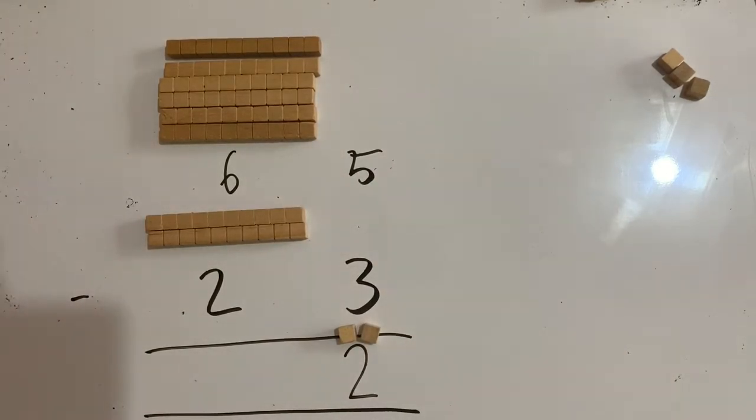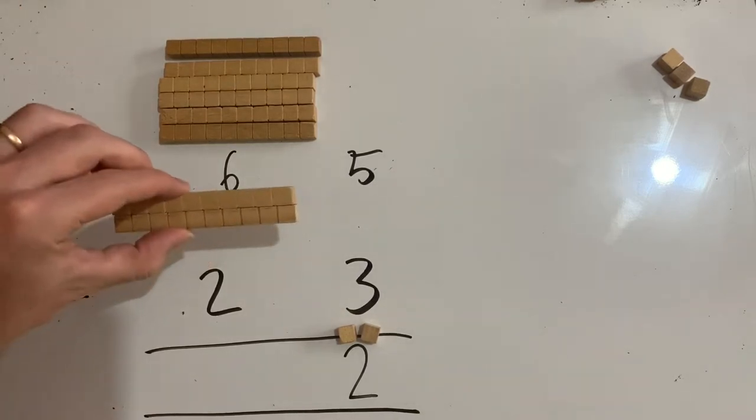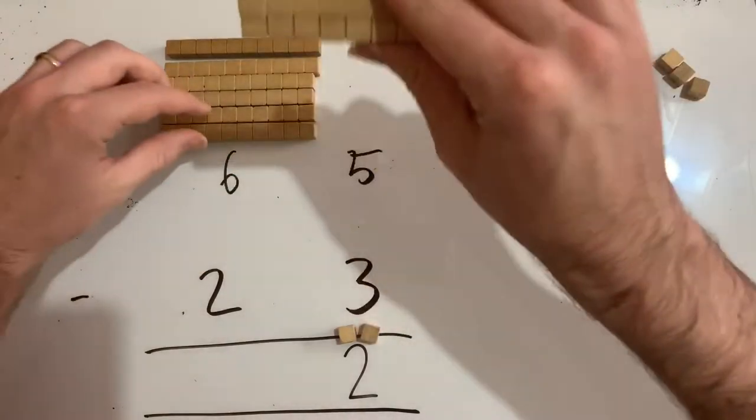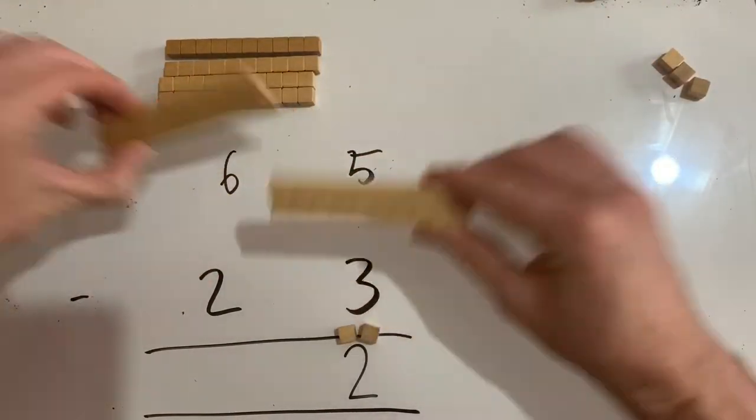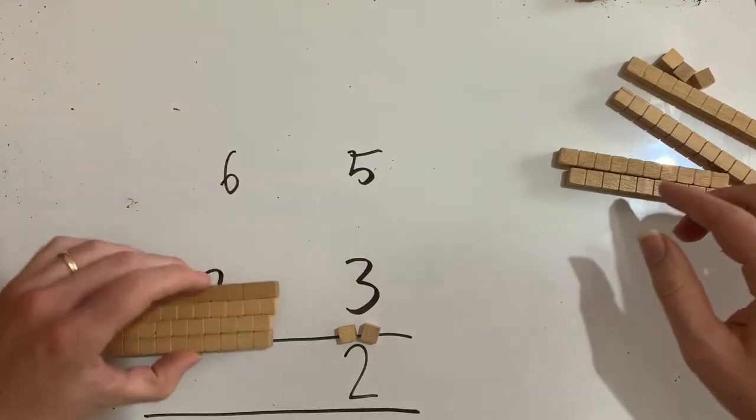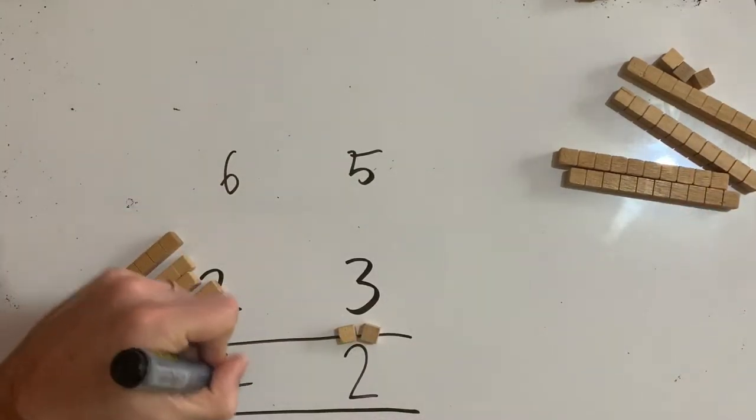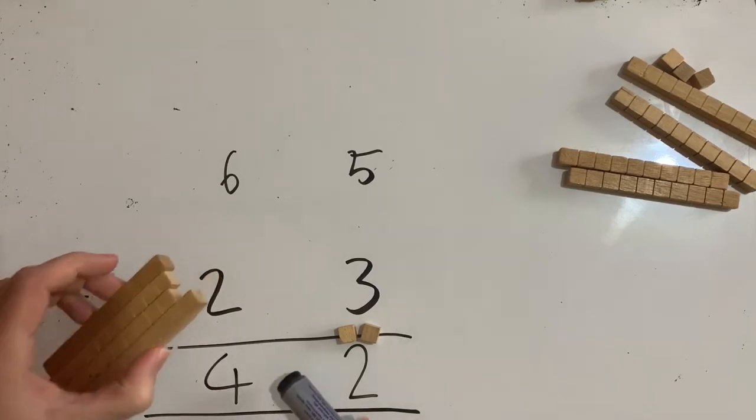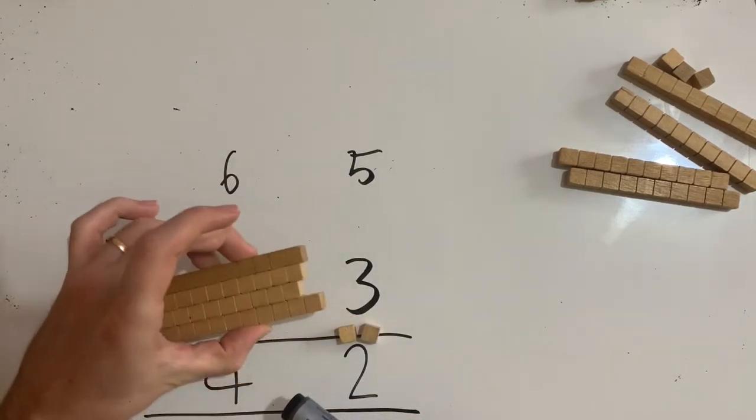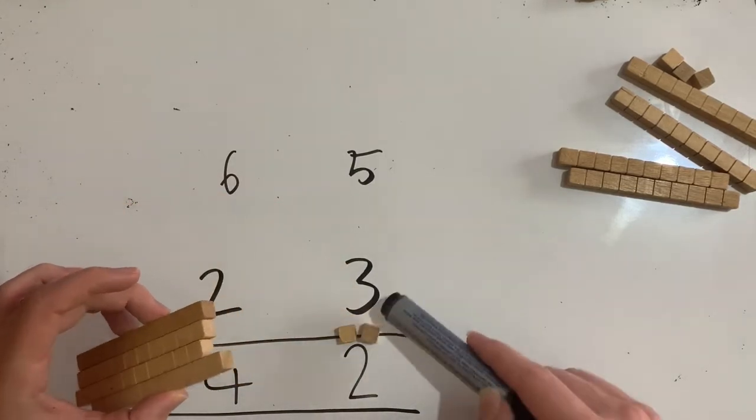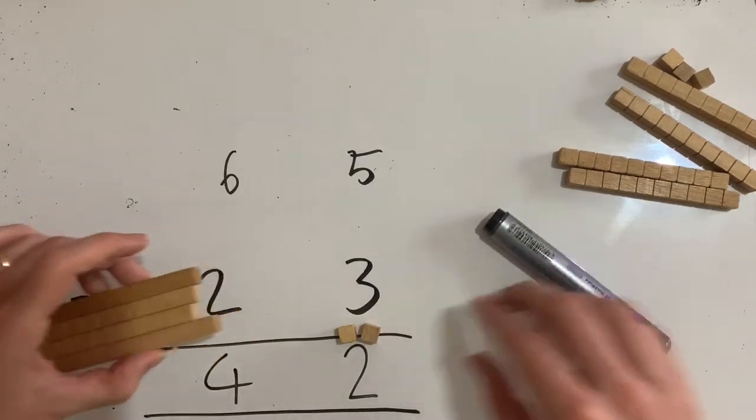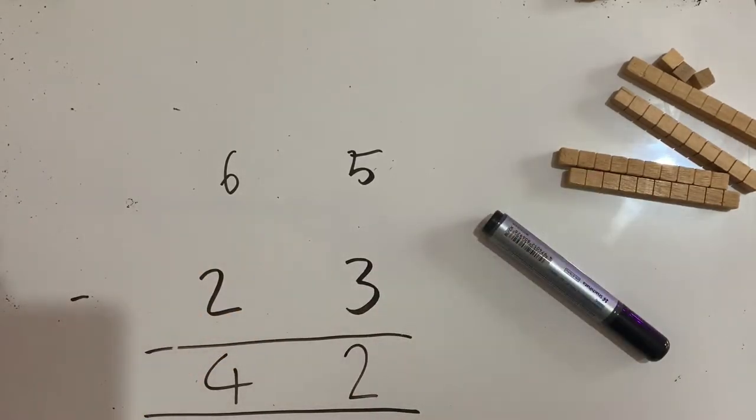Let's do the same thing up here. So I've got six tens and I've got two tens. I need to take this many away from the six tens. So I need to take two tens away, which leaves me with four tens. And so I write down the four. It's in the tens column, so that tells me that actually means 40. This is in the units column and that actually means two. And so my answer to 65 minus 23 is 42.